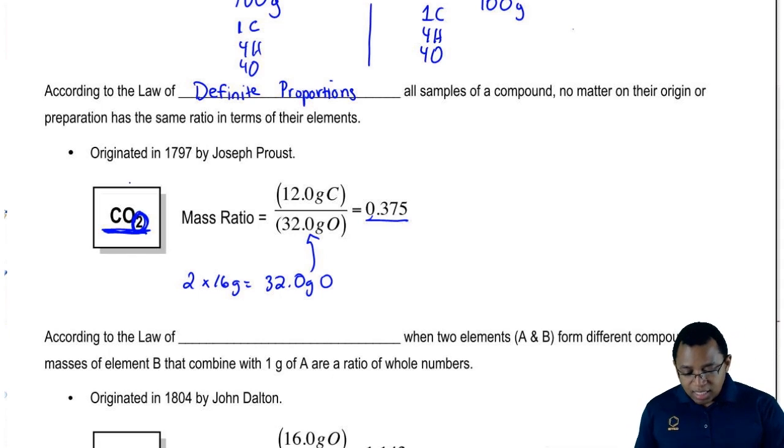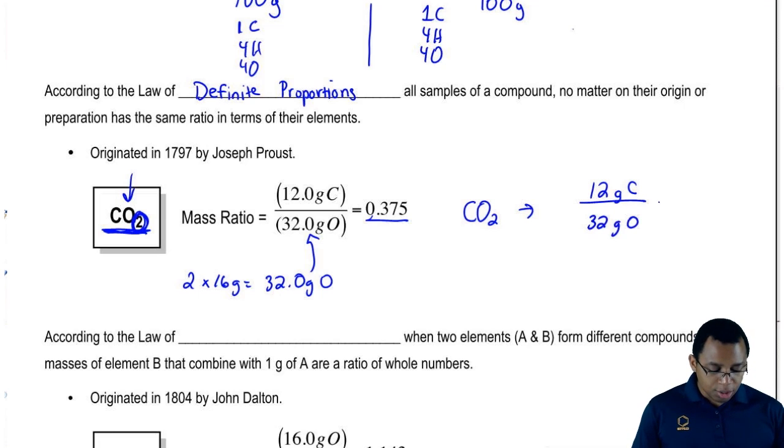If we said that this CO2 came from the exhaling, it doesn't matter. If we had CO2 from the exhaust of a car or from some type of heavy machinery, it would still have the same mass ratio. It would still be 12 grams of carbon over 32 grams of oxygen and it would still have the same mass ratio. That's what the law of definite proportions is saying.